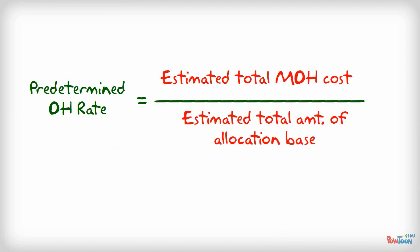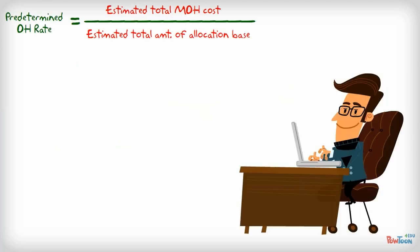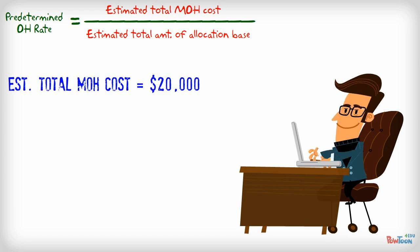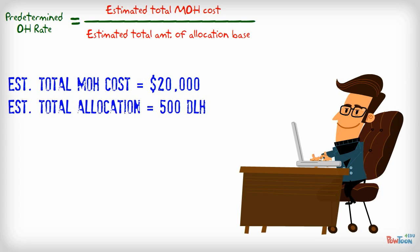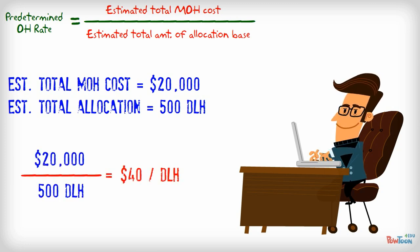Let's see the application of this formula. Our accountant estimated that the total manufacturing overhead for the year would be $20,000. He also estimated that we will need 500 direct labor hours to meet our production capacity. Simply take those numbers and divide. We will get a predetermined overhead rate of $40 per direct labor hour.